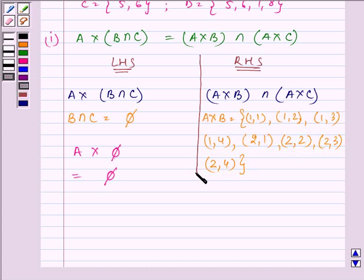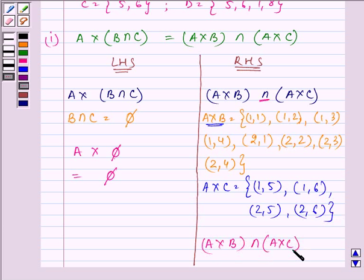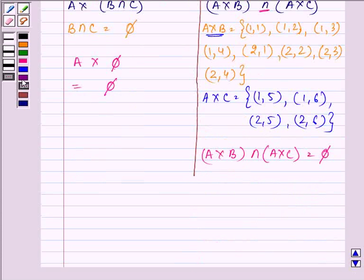Proceeding on. Now here, A × C. We will be having elements as (1, 5), (1, 6), (2, 5), (2, 6). Now, is there any term which is common to both these sets? Because in the middle, we have intersection and the answer comes out to be a null set. So, LHS = RHS and hence we can write that it is verified. This completes the first part.